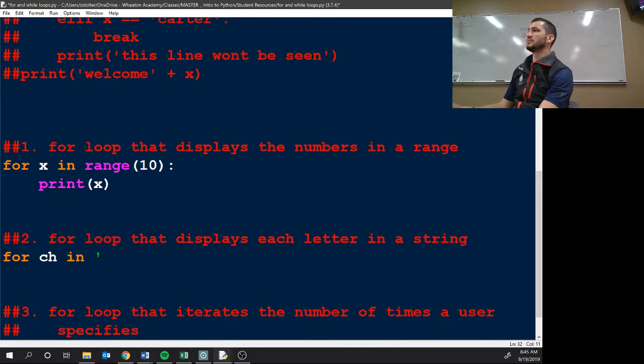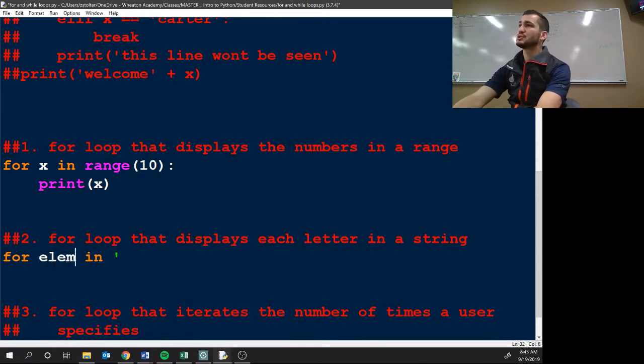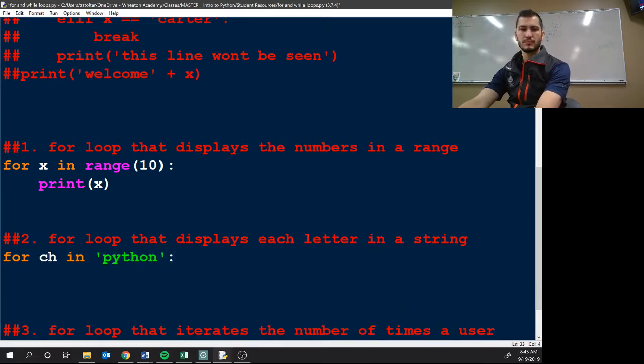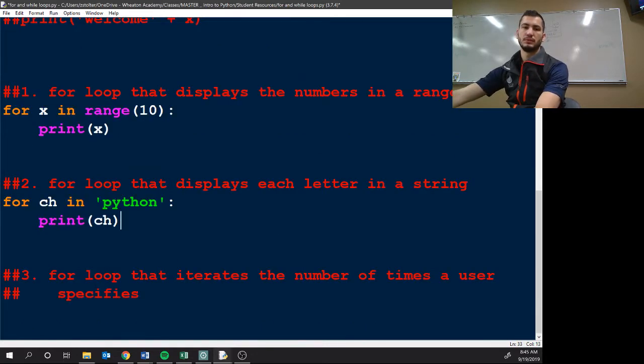So it is really good to, from the beginning, from the get-go, understand that this for loop is dealing with string characters. I need this variable to represent that. Or if I'm going through elements in a string, I might do elem, short for elements, that sort of thing. Okay, so for ch in Python, print ch.